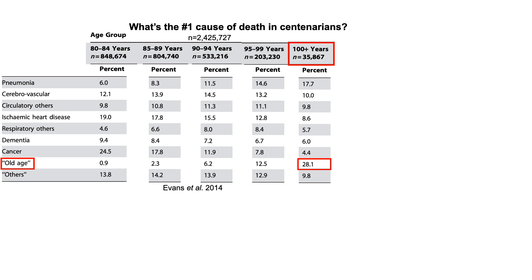So what about cause-specific mortality like heart disease and cancer? This would be the obvious choice. We can see that 8.6% of all people who died that were older than 100 died from heart disease, and about 4 out of 100 died from cancer.